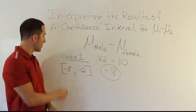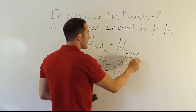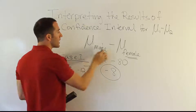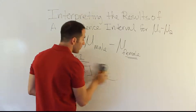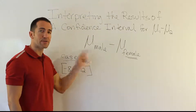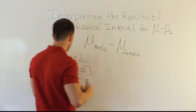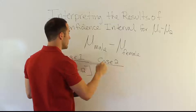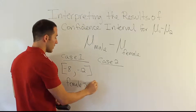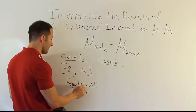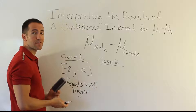So what does it mean that both limits are negative? It means the difference indicates that the female mean is bigger than the male mean, because the only way you subtract two numbers and end up negative is if the number on the back end is larger than the front. That indicates the females had the higher average than the males — that's because both limits are negative. So in Case 1, females scored higher.